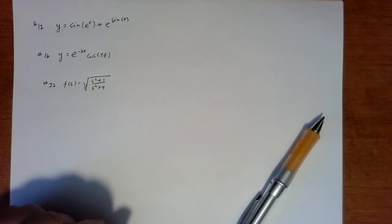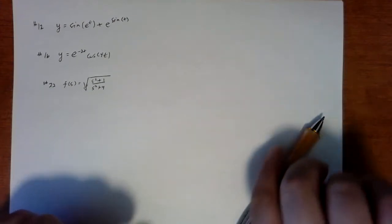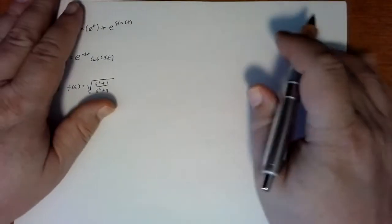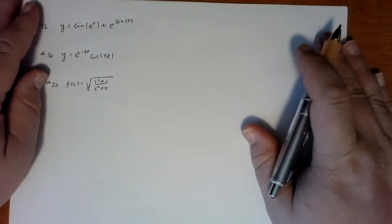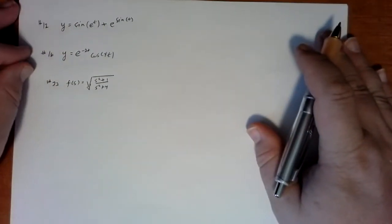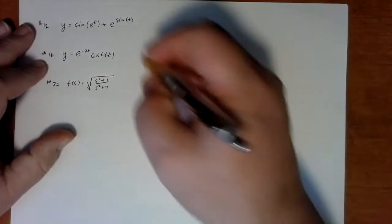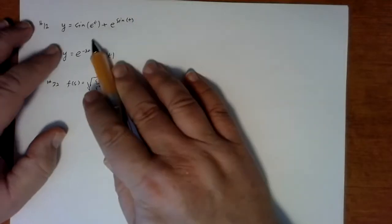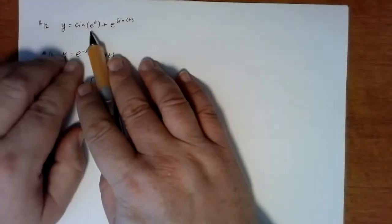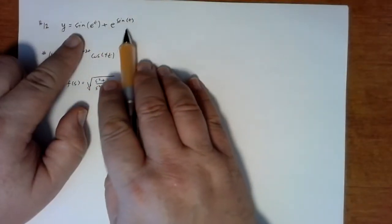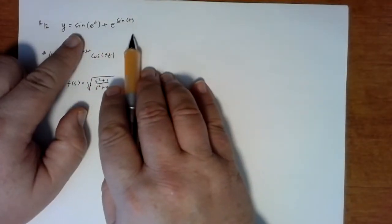In this video we're working through section 3.4, the chain rule, and we're just trying a few exercises. For example, number 12, we have sine of e to the t plus e to the sine of t.